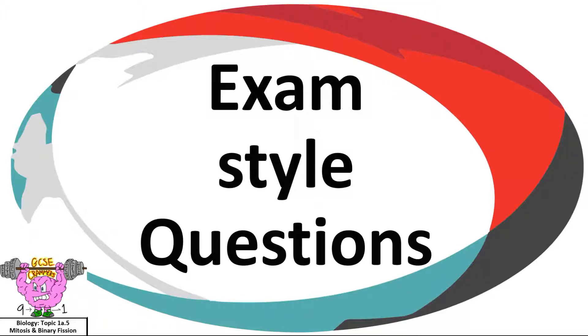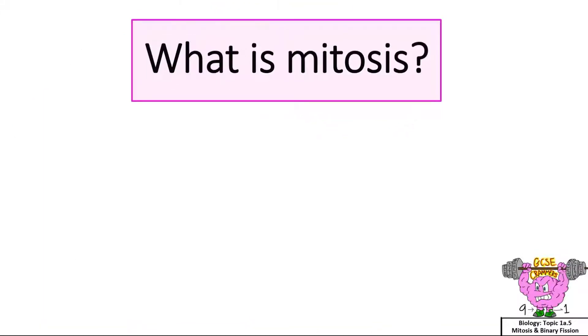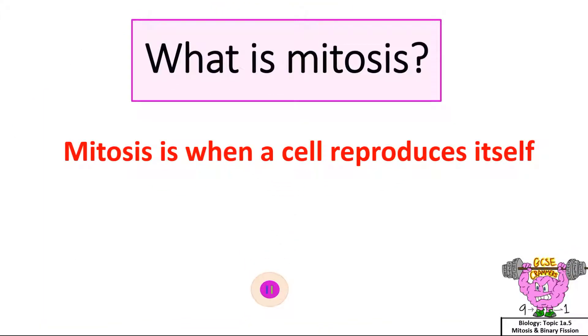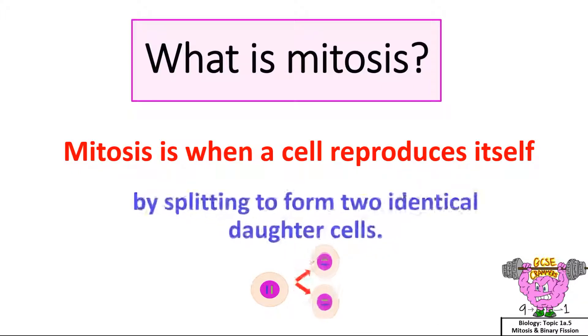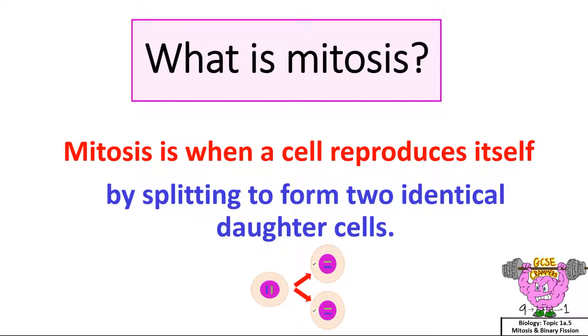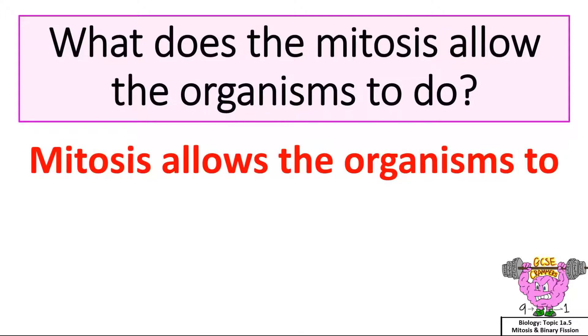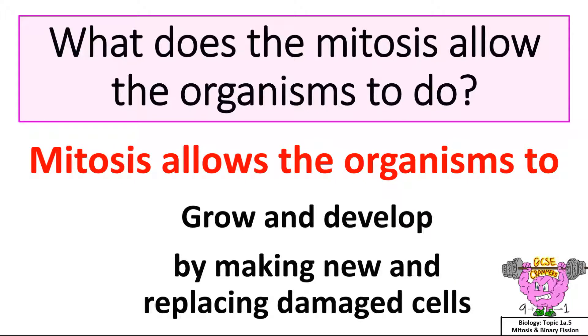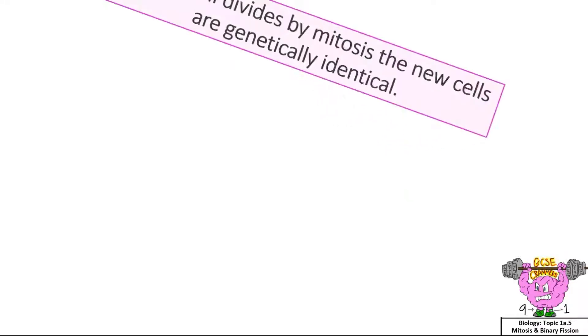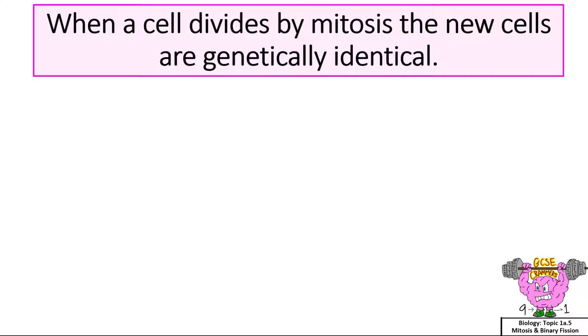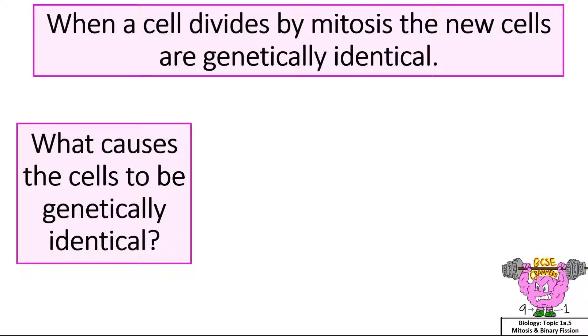Exam style questions. What is mitosis? Mitosis is when a cell reproduces itself by splitting to form two identical daughter cells. What does mitosis allow organisms to do? Mitosis allows organisms to grow and develop by making new and replacing damaged cells. When a cell divides by mitosis, the new cells are genetically identical. What causes the cells to be genetically identical?